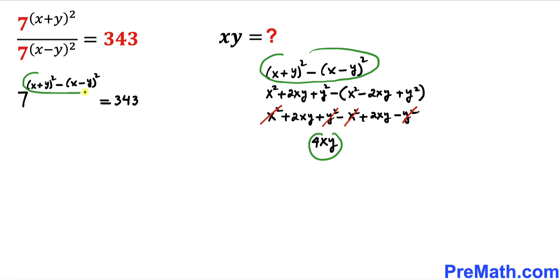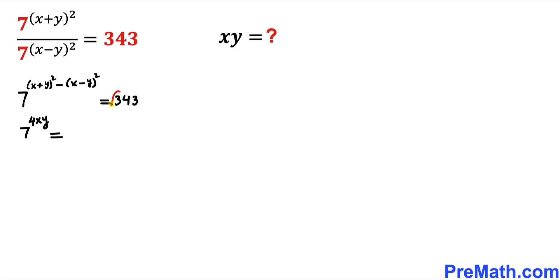So therefore I'm going to replace this whole thing by 4xy. The left hand side could be written as 7^(4xy) equals... Now let's focus on 343. This could be written as 7³. So therefore the right hand side becomes 7³.